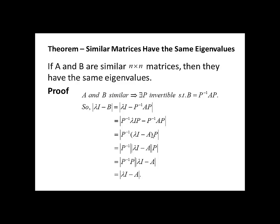Theorem: Similar matrices have the same eigenvalues. If A and B are similar N by N matrices, then they have the same eigenvalues. Recall that A and B are said to be similar if there exists an invertible matrix P such that B equals P inverse AP.